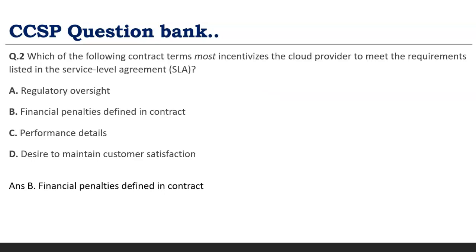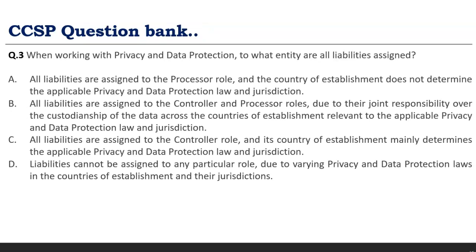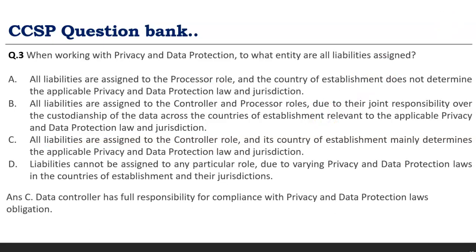Third question — very important and asked frequently: When working with privacy and data protection, to what entities are all liabilities assigned? You might get confused because there is a processor role and a controller role. However, we've seen that all liabilities are assigned to the controller. Whether it is a mistake of the CSP — Oracle, Google Cloud — or your payment partner, the fully responsible entity is always the controller. This type of question is asked repeatedly with different language, but the answer never changes.